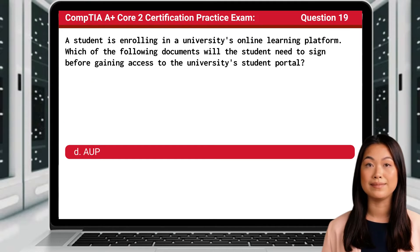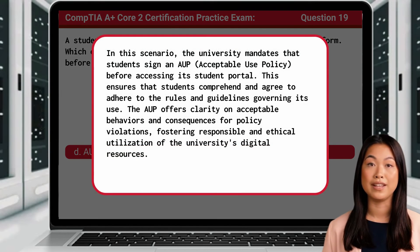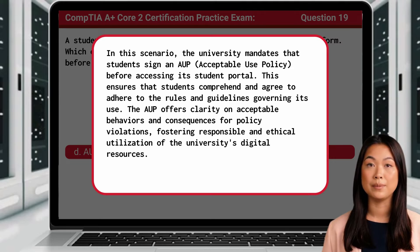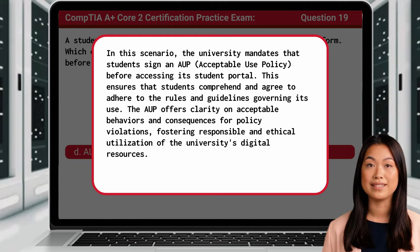The answer is D: AUP. In this scenario, the university mandates that students sign an AUP, or Acceptable Use Policy, before accessing its student portal. This ensures that students comprehend and agree to adhere to the rules and guidelines governing its use. The AUP offers clarity on acceptable behaviors and consequences for policy violations, fostering responsible and ethical utilization of the university's digital resources.